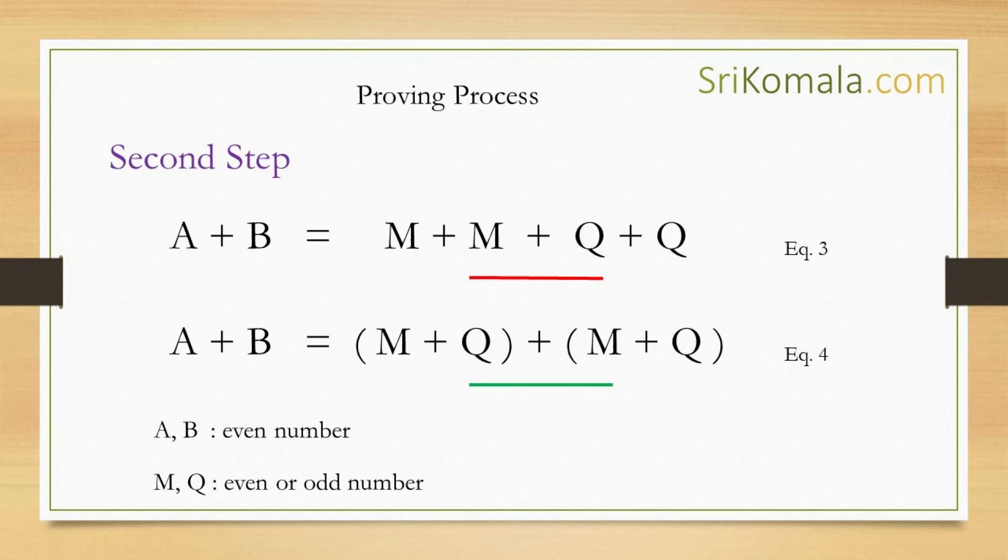According to axiom number two, the order of such terms can be rearranged into Q plus M. This is because the addition of two even numbers, in this case A and B, always results in another even number. And all even numbers can be divided into two equal numbers. In this case, that number is M plus Q.